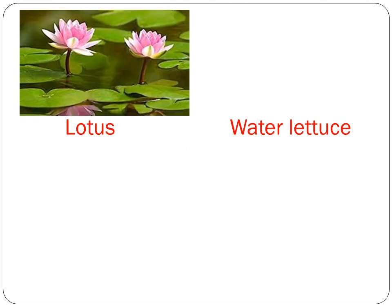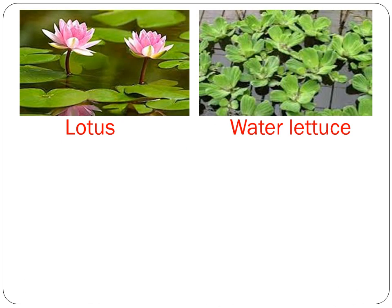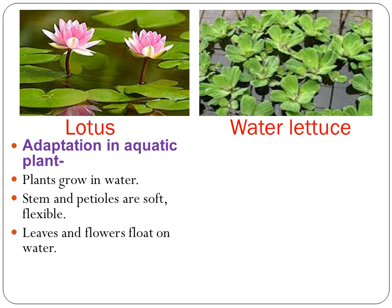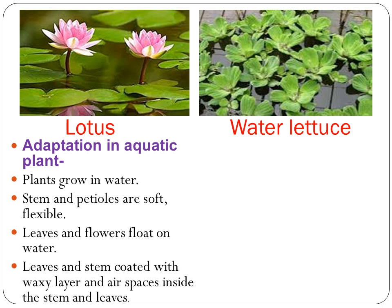Lotus and water lettuce both show adaptation in the aquatic region. These plants grow in water. Their stem and petioles are soft and flexible. Leaves and flowers float on water. The leaves and stem are coated with a waxy layer and have air spaces inside the stem and leaves.